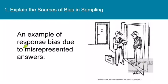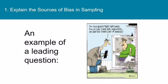Here's an example of response bias due to misrepresented answers: 'Put me down for whoever comes out ahead in your poll.' People like to be in the popular group and may say what they think is the correct answer. And here's an example of a leading question — the pollster says, 'Do you agree that national polls are fair and unbiased, or are you some kind of moron?' Nobody wants to admit to being a moron, so of course she'll agree that national polls are fair and unbiased.